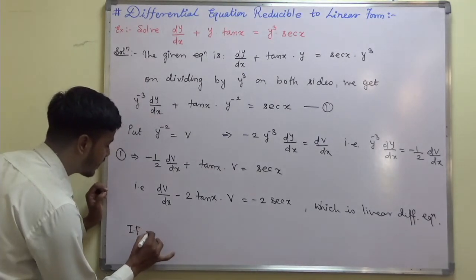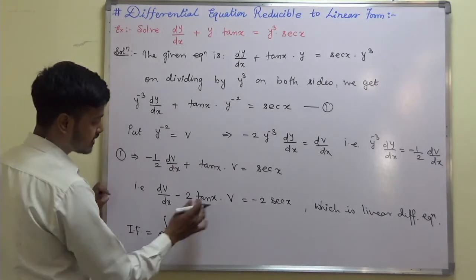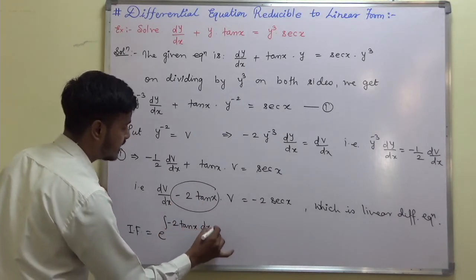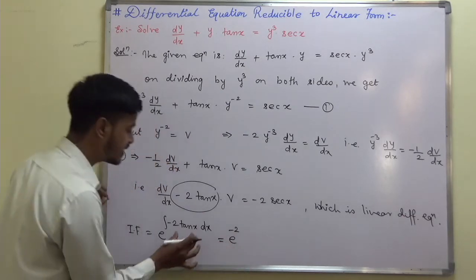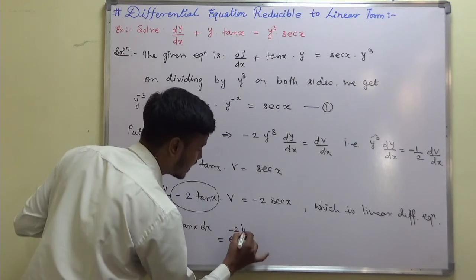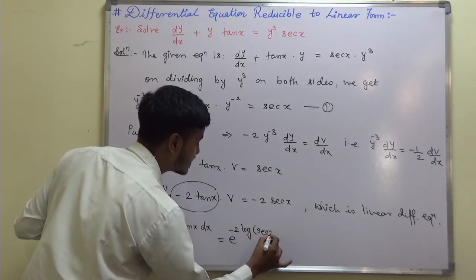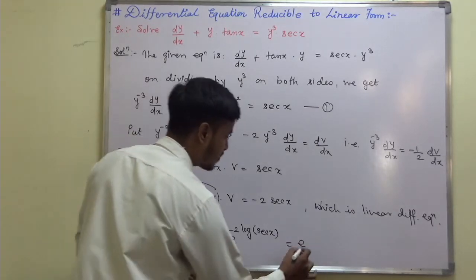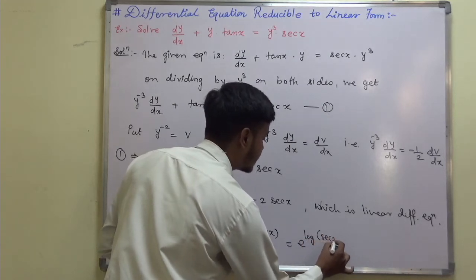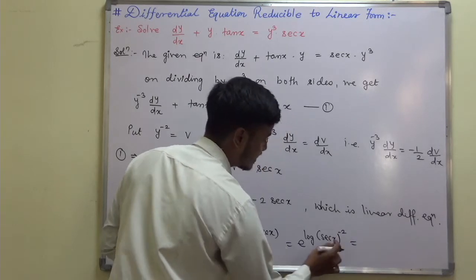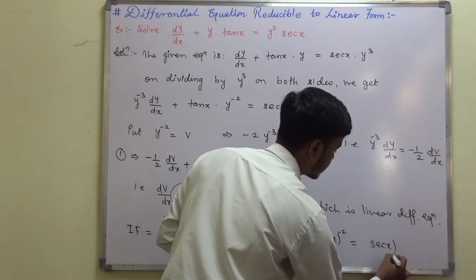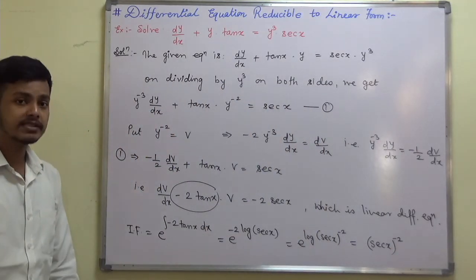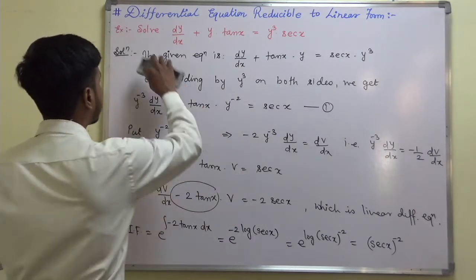For this linear differential equation, find the integrating factor: IF equals e to the power of the integral of minus 2·tan(x) dx. The integration of tan(x) is log(sec(x)), so this becomes e to the power of log(sec⁻²(x)), which simplifies to sec⁻²(x), i.e., cos²(x).